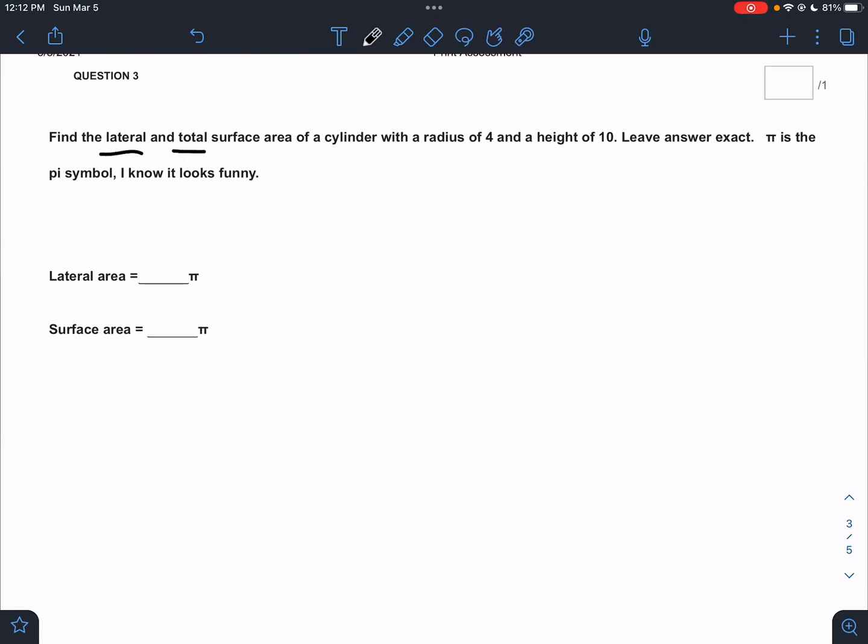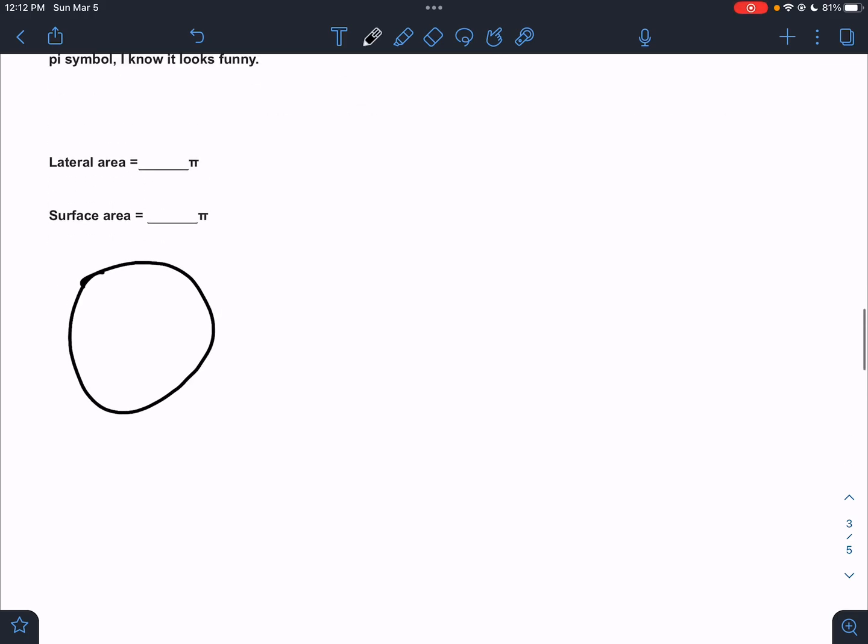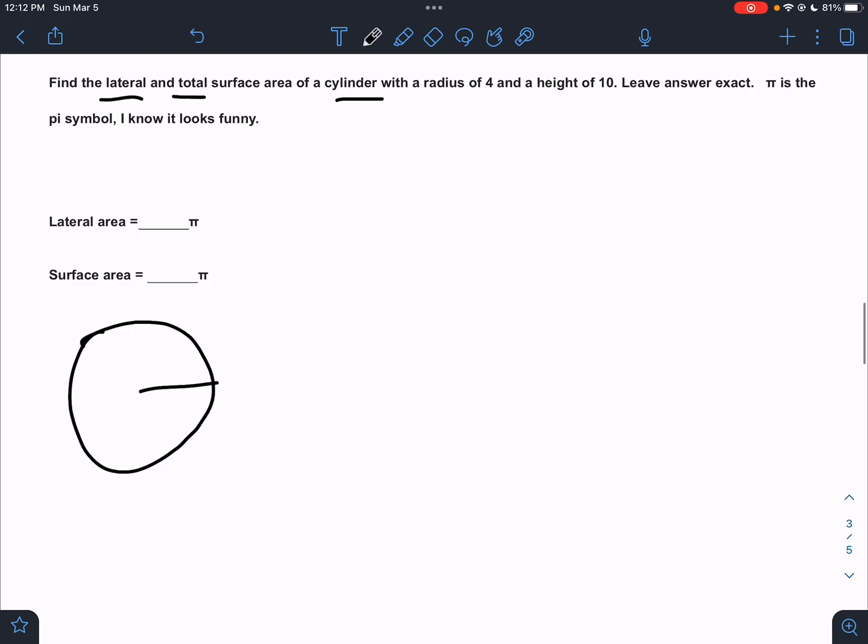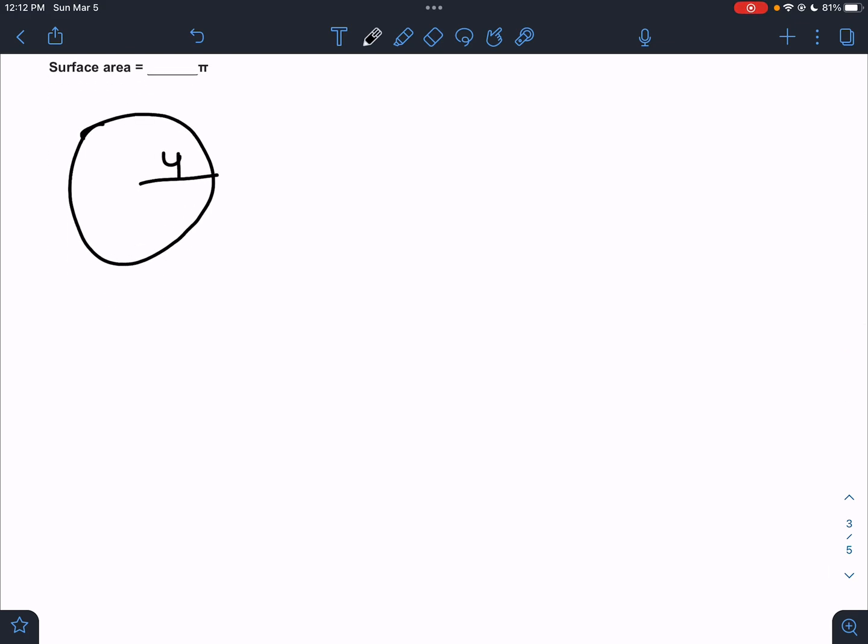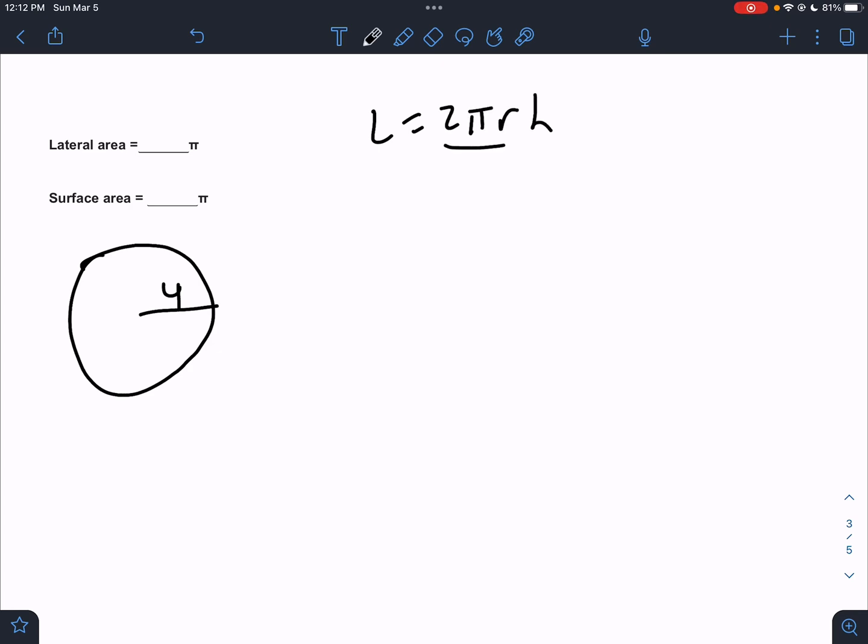We're doing lateral and total of a cylinder this time. So the base of a cylinder is a circle. The radius is 4. So we need, it's the same, guys. It's still perimeter and area. It's just they call it circumference. So the formula for lateral is 2πrh, right? That's the circumference times the height.